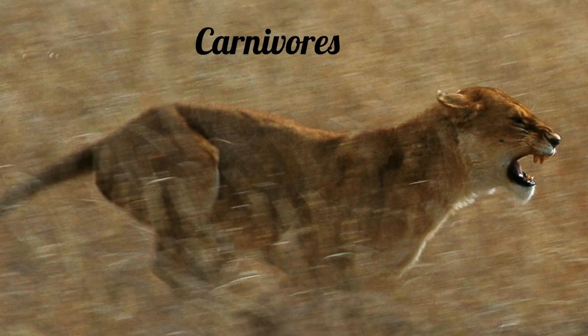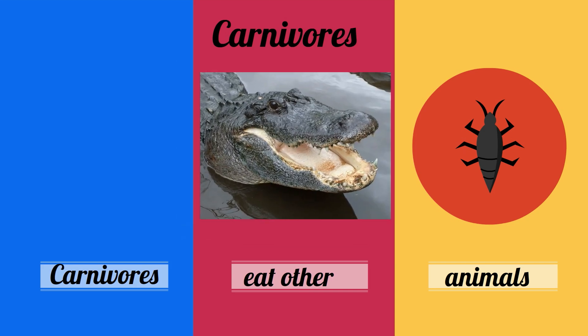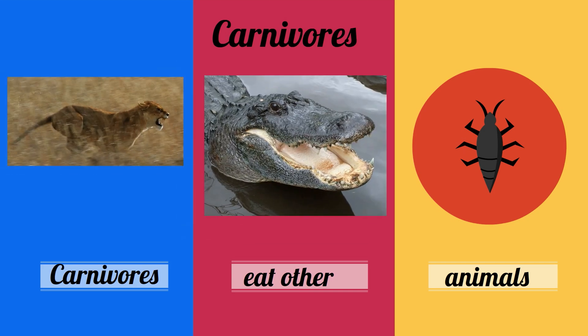With carnivores, when it's time for a meal, they like animals. Common examples are alligators and lions.